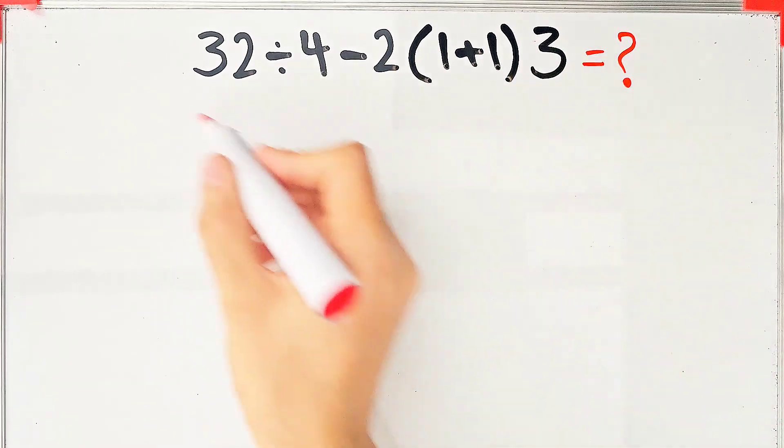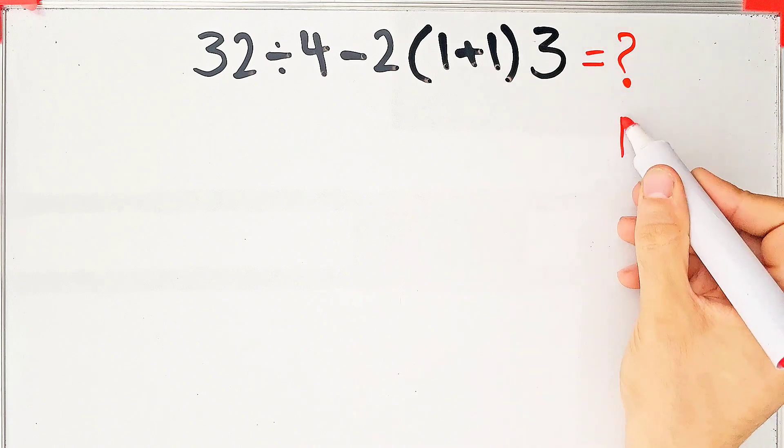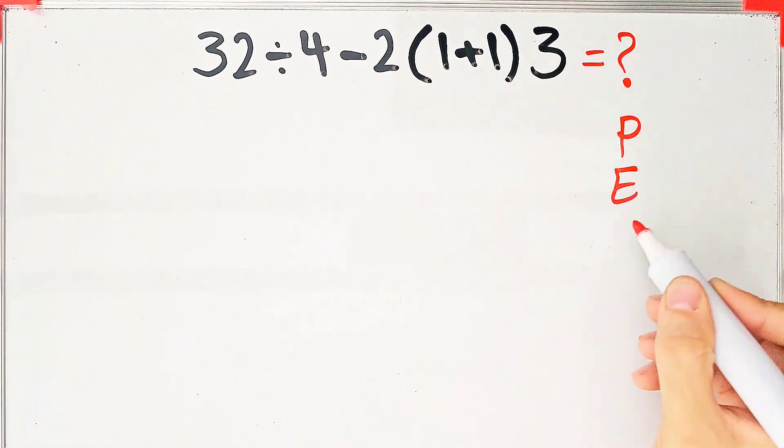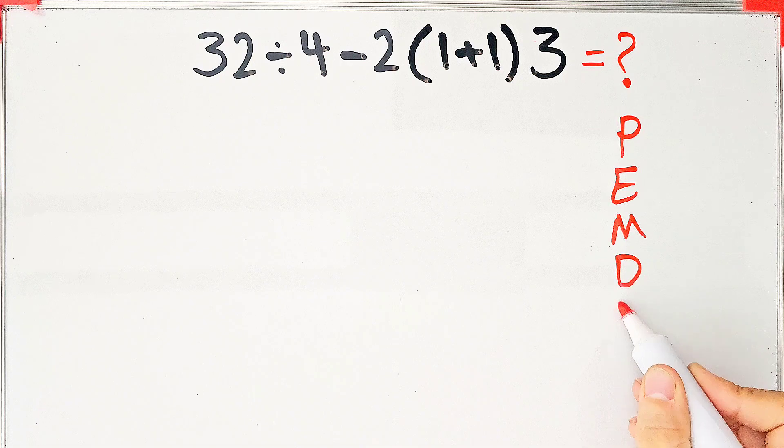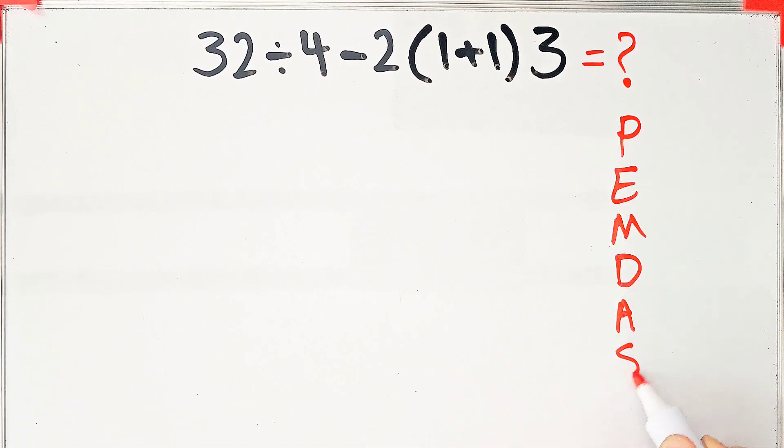To solve this question, we need to follow the order of operations, which is PEMDAS. PEMDAS shows the priority of the mathematical operations. If you don't pay attention to this rule, you get the wrong answer.